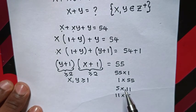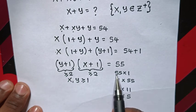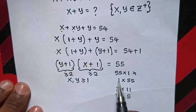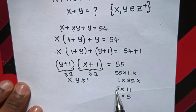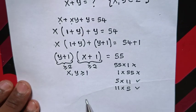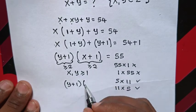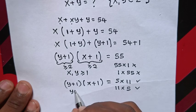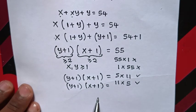Now, to check from these possibilities, both factors must be greater than or equal to 2. So 55 times 1: 55 is greater than 2, but 1 is not greater than or equal to 2, so this is not correct. And 1 times 55: 1 is less than 2, so this is not correct either. But 5 times 11: 5 is greater than 2 and 11 is greater than 2, and similarly 11 times 5. So we have two valid cases: (y plus 1)(x plus 1) equals 5 times 11, and (y plus 1)(x plus 1) equals 11 times 5.